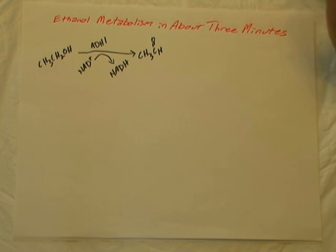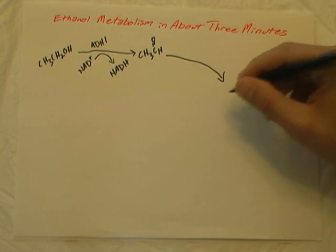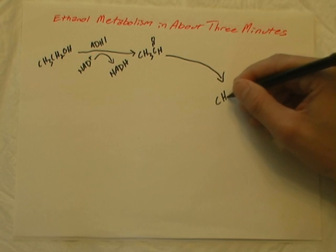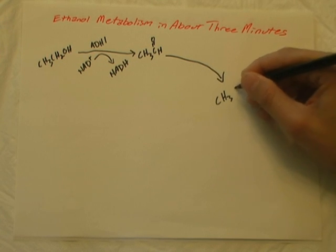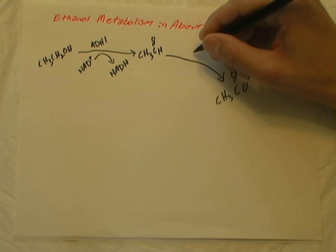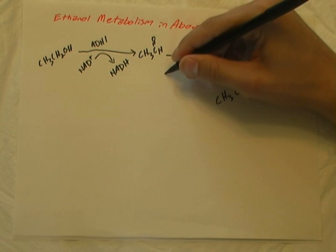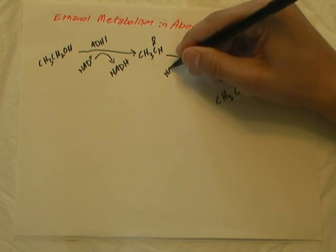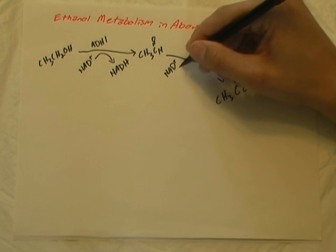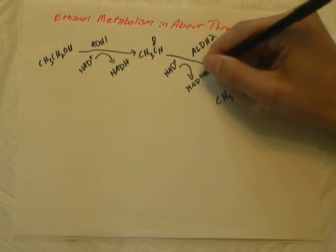Acetaldehyde is responsible for much of the toxic effects of alcohol consumption, and it is converted to the acetate ion by the mitochondrial enzyme acetaldehyde dehydrogenase 2. This reaction also results in the generation of one NADH.